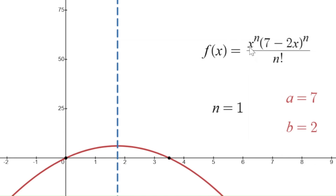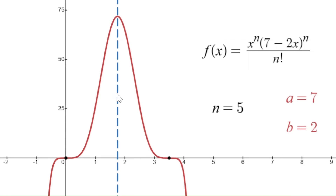Notice that all the functions have zeros at 0 and at 3.5, and they're positive in between — this is clear from the formula. And notice the symmetry: all of these functions are symmetric around the line x = 7/4. The easiest way to see this is to recognize that the numerator can be rewritten as x(7 minus 2x) all raised to the Nth power. That quadratic is symmetric around its axis of symmetry halfway between its zeros, and raising it to the Nth power doesn't destroy that symmetry.